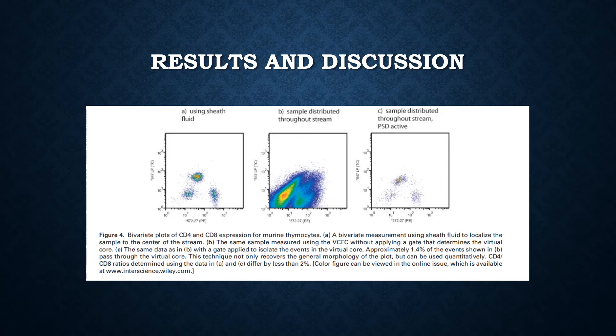We have two graphs: in B without the gate, and in C the gate is active, which eliminates the virtual core, or pretty much subtracting the virtual core from the graph, which gives you the pure results. In comparing A and C, using the sheath fluid versus using the VCFC, we can see almost the same results. According to the article, there is only less than two percent difference in numbers, which shows that the numbers are so close and there's no significant difference between the results.